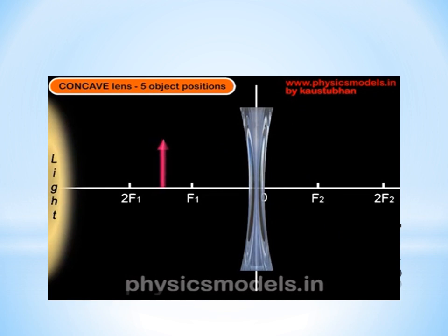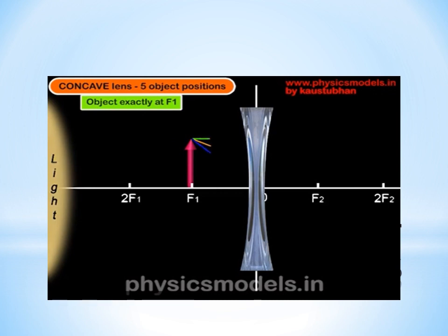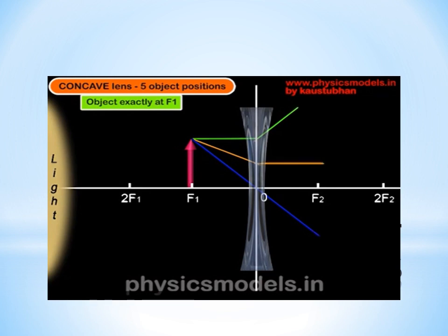Now we move the object closer and place it exactly on the focal point F1. We draw the same three rays: the green ray hits the lens, diverges upwards, and is projected back towards F1; the orange ray aimed at F2 travels parallel to the principal axis; and the blue ray goes through O. Just a point of clarification: all these colors are just to make the image easier to understand - we are not using different wavelengths of light. The image is again virtual, erect, and diminished, with its position between O and F1.